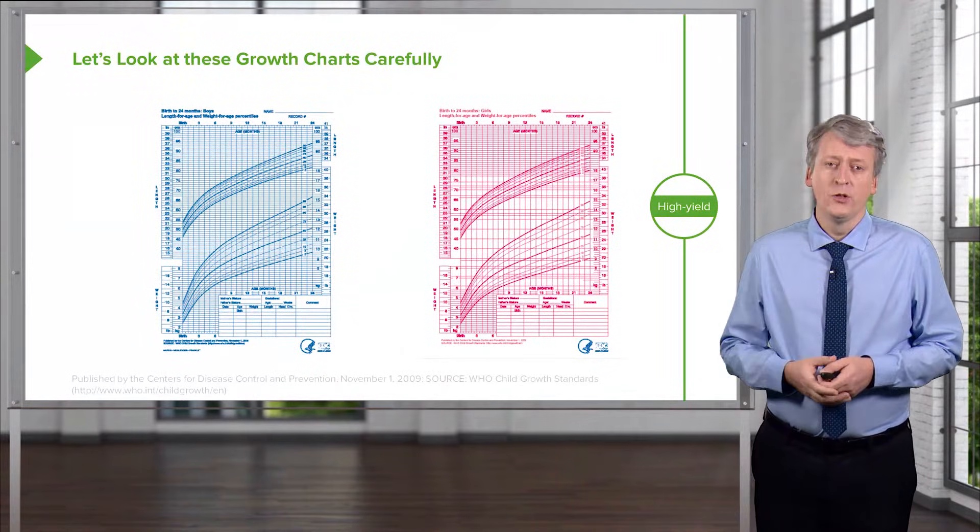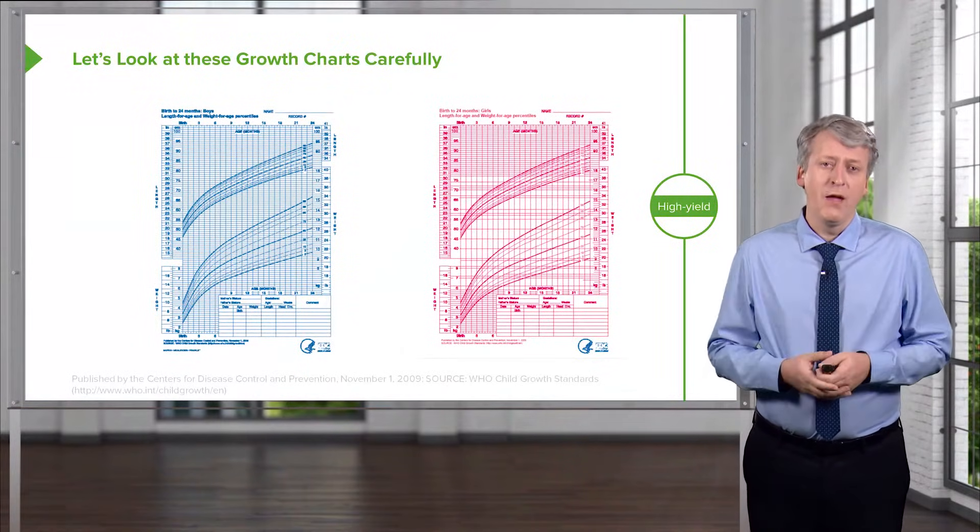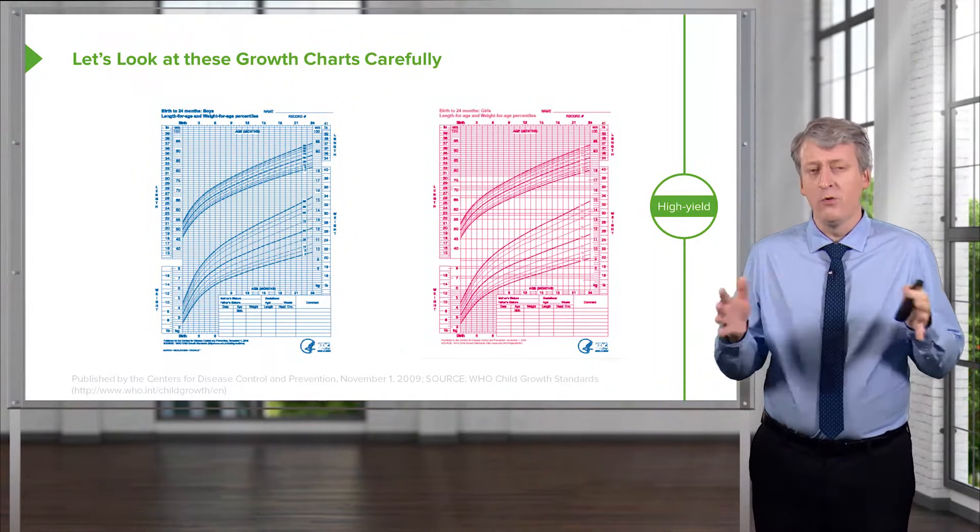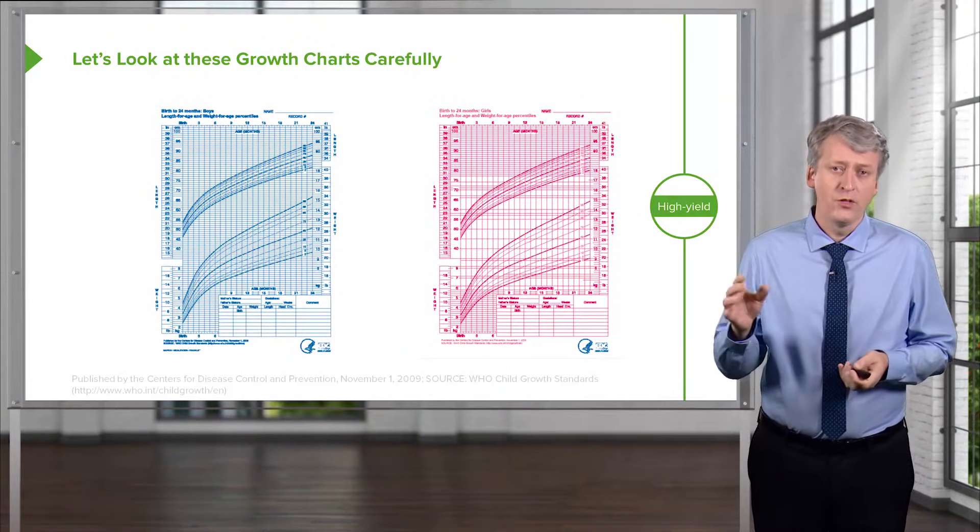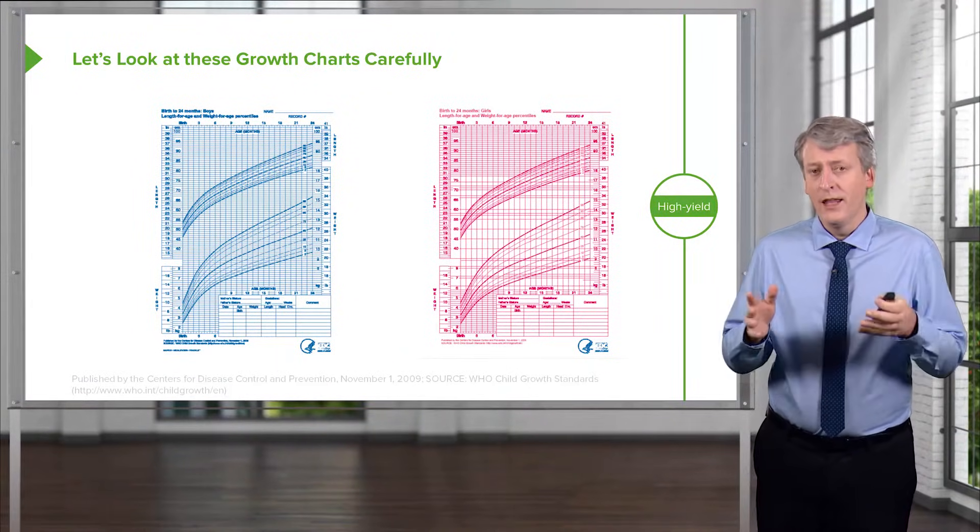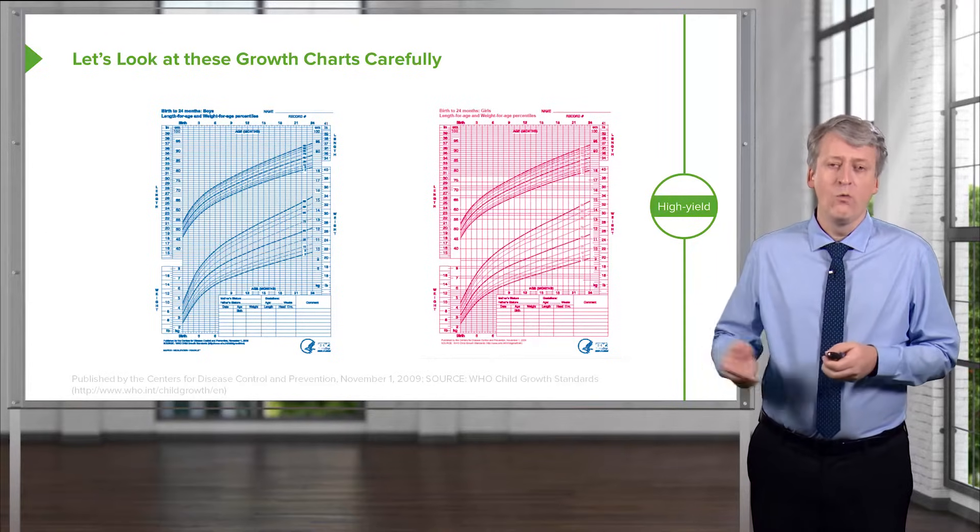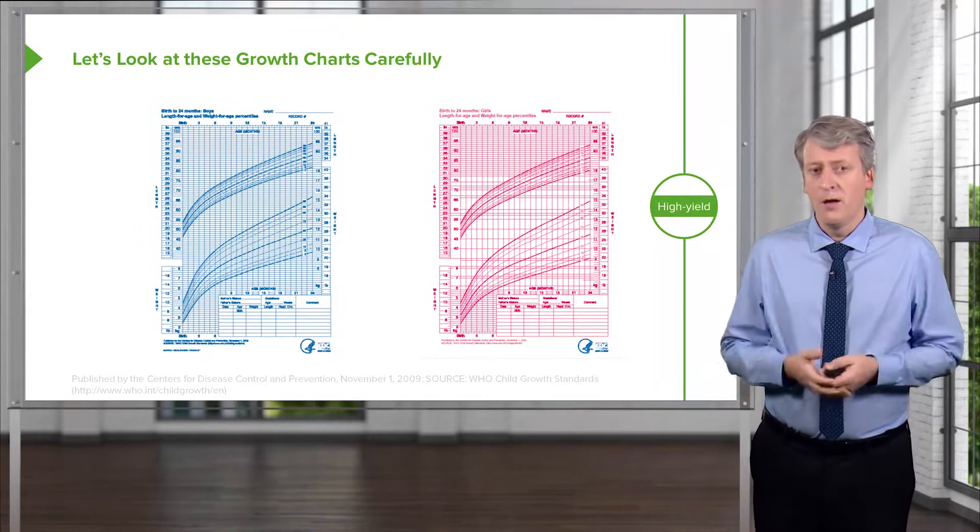When we're seeing these children, we're frequently recording their various parameters. Early in life, we do head circumference, weight, and height. And then later on, we do mostly just the weight and height, and we're calculating things like BMI.